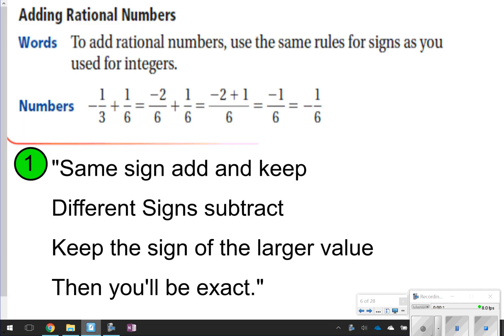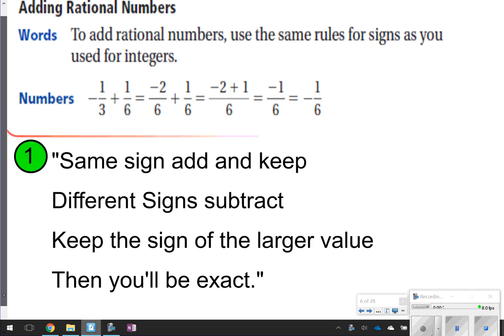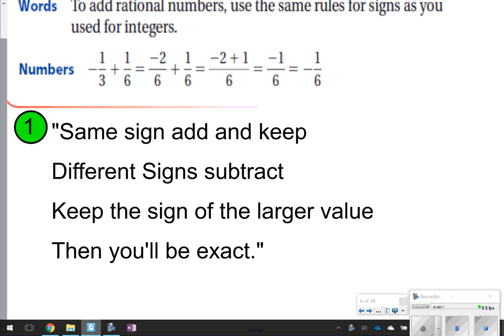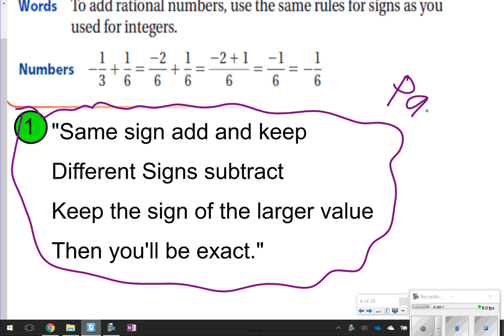The first thing we want to make sure we understand is when we add rational numbers, we're using those same rules that we learned for integers. So what we're going to write down is our song. And remember our song from chapter one: same sign, add and keep; different sign, subtract. Keep the sign of the larger value, then you'll be exact. Go ahead and pause the video now and write down the song so you remember the rules for adding rational numbers. Once you're done, click play so we can go on.